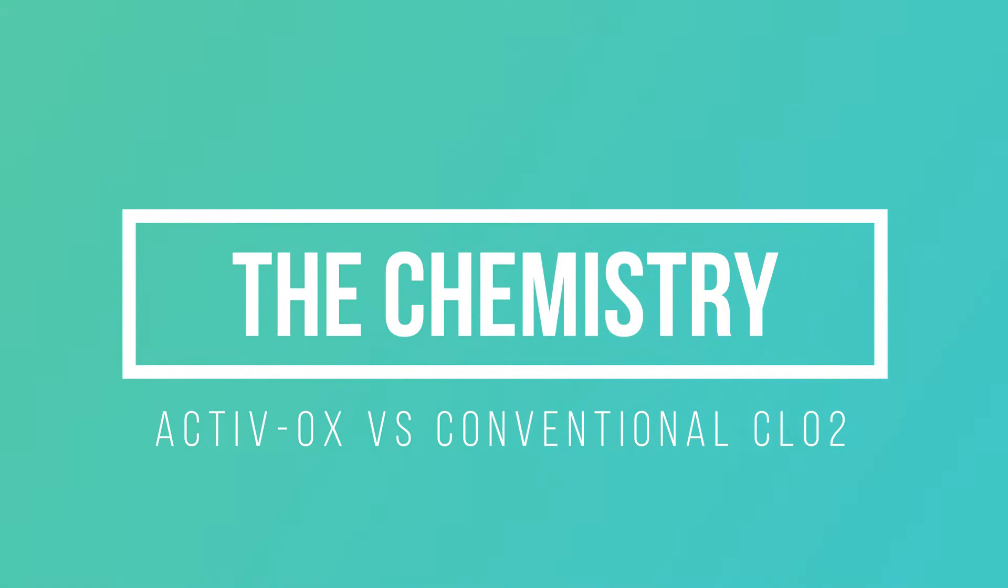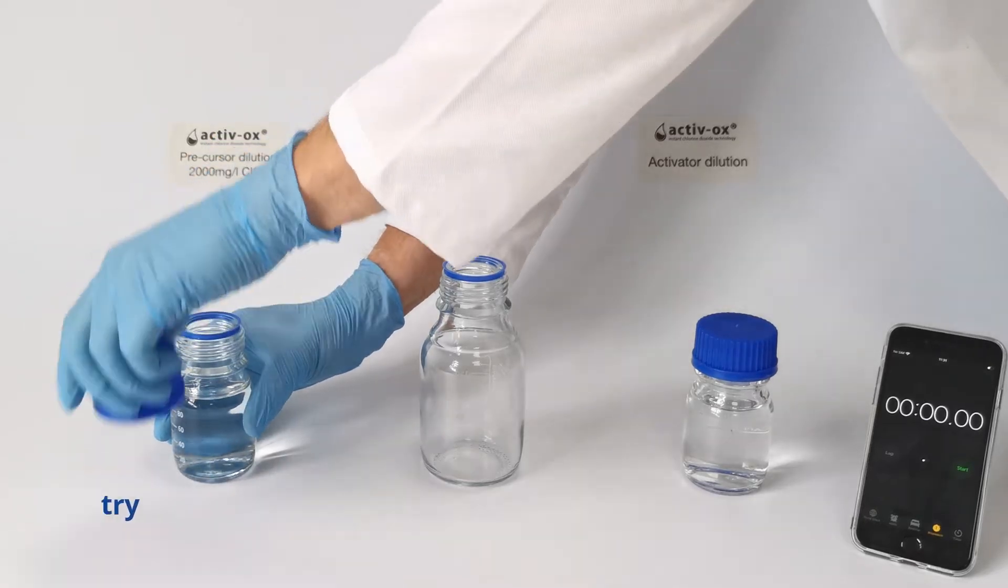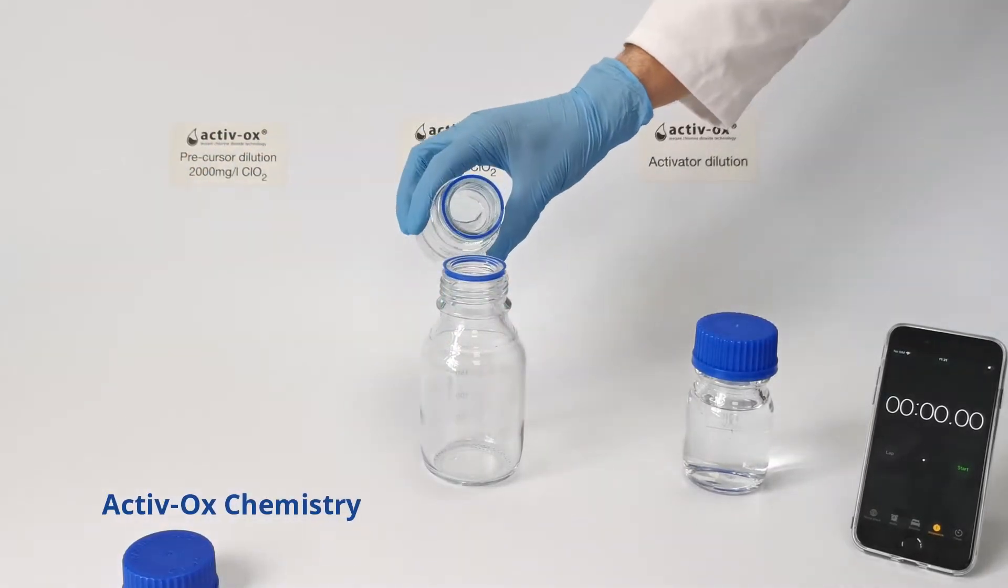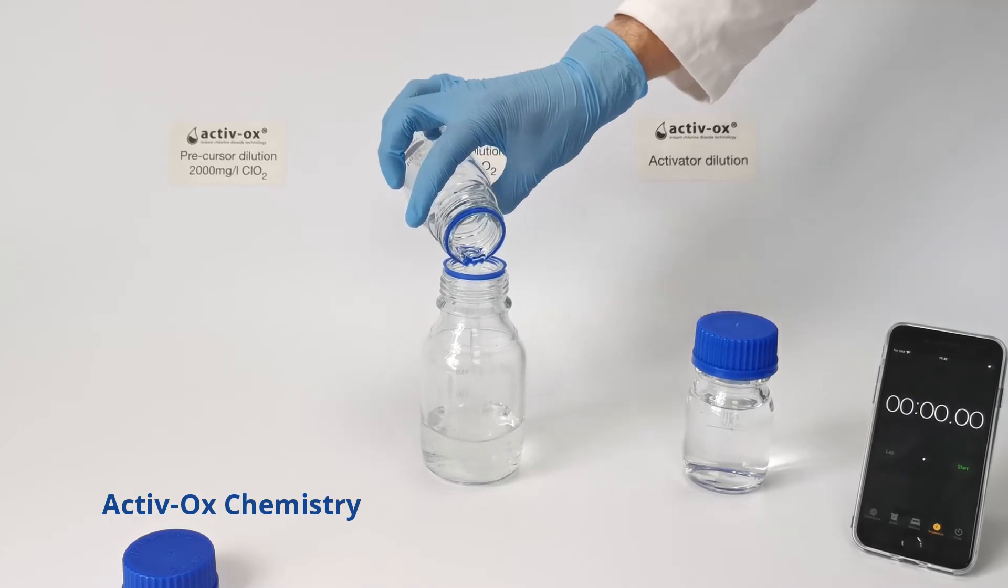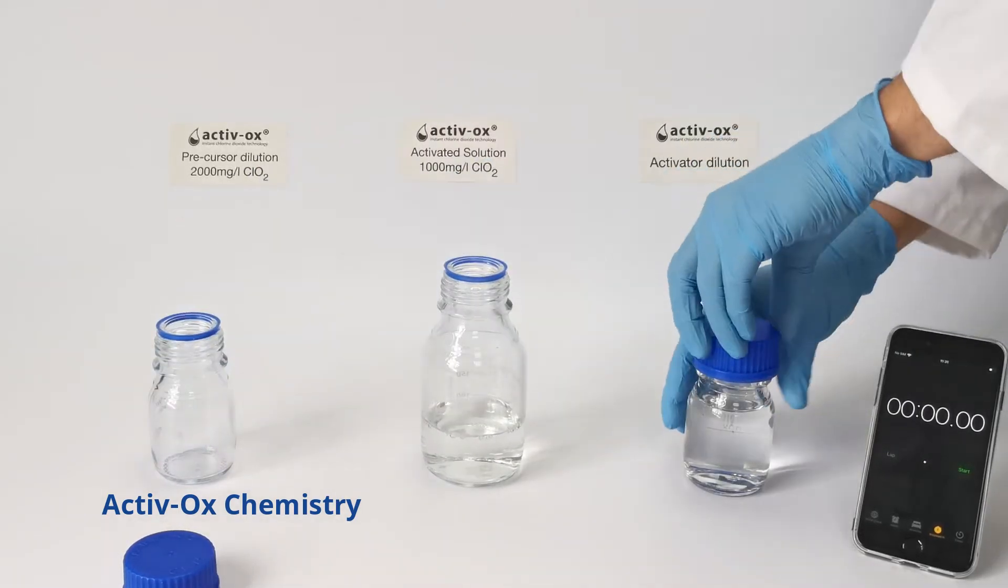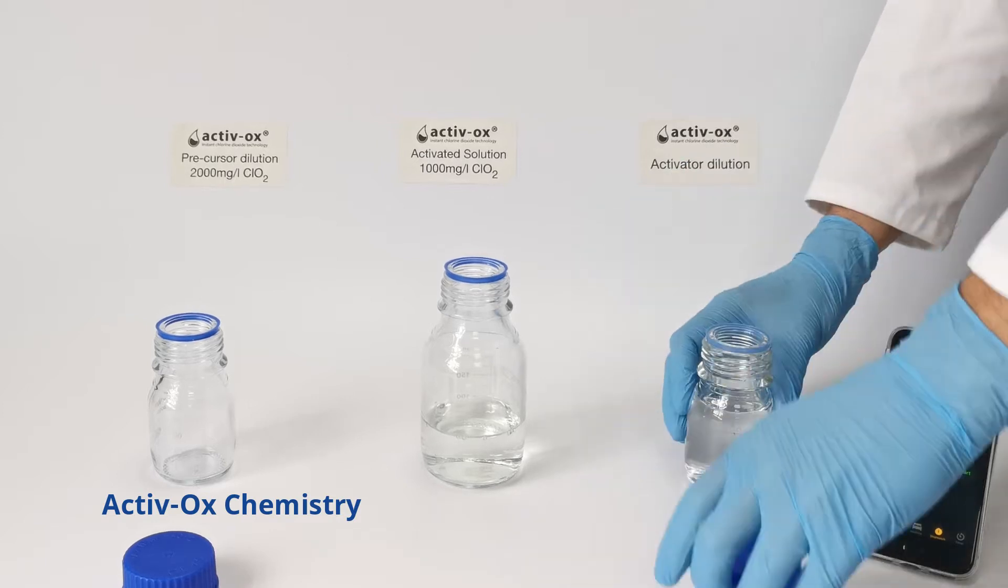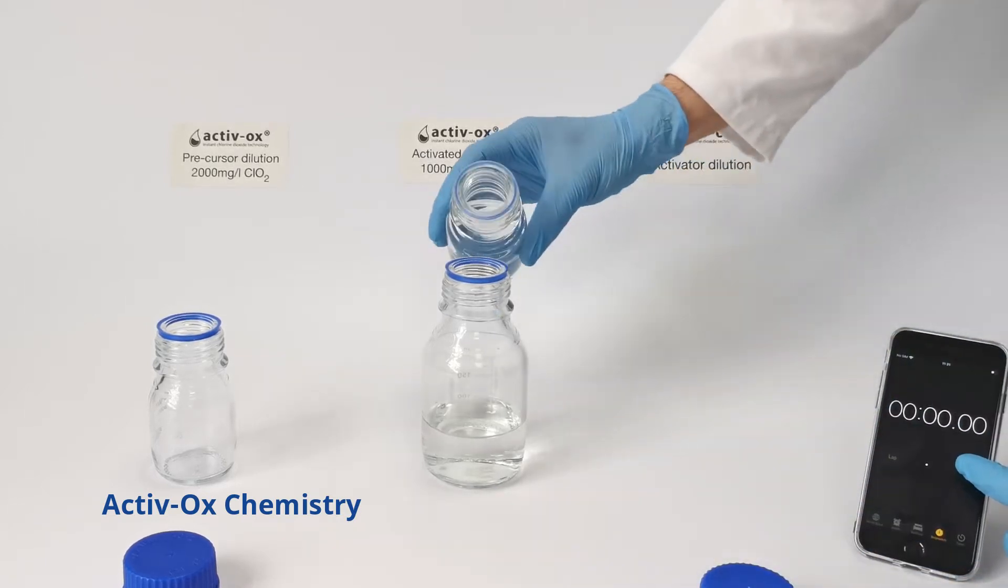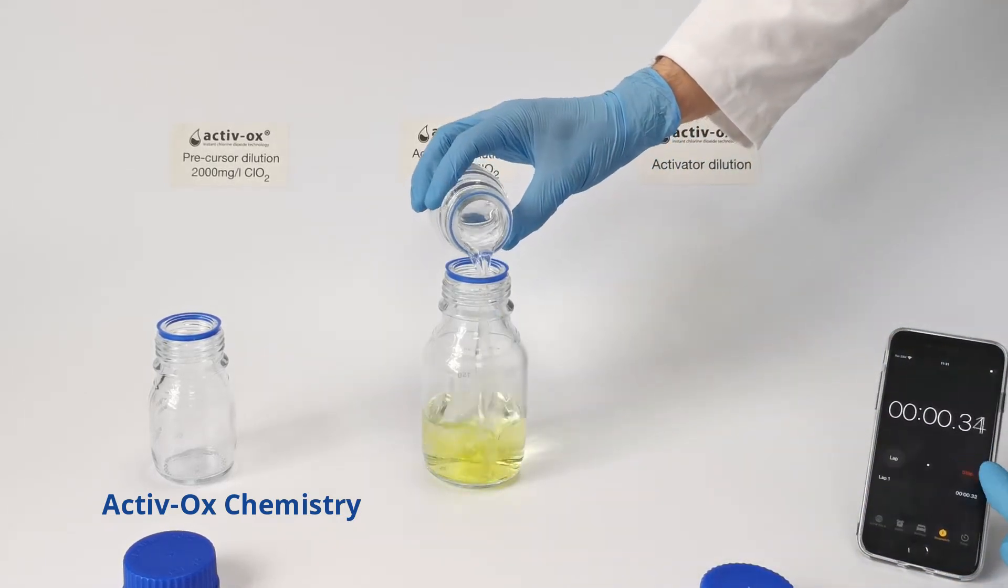Let's consider the chemicals first. This demonstration shows how Activox's unique chemistry reacts instantly, releasing an almost full yield of 95% chemical conversion to chlorine dioxide. Another important thing to note is that the chlorine dioxide is produced directly in solution, ready to use.